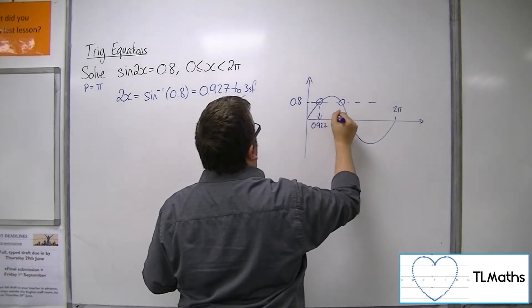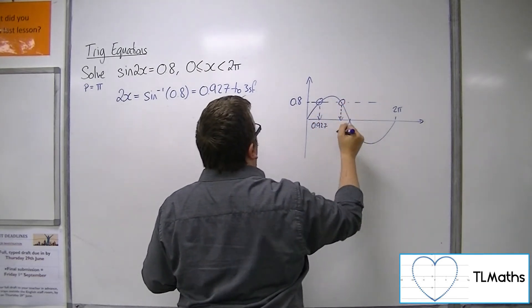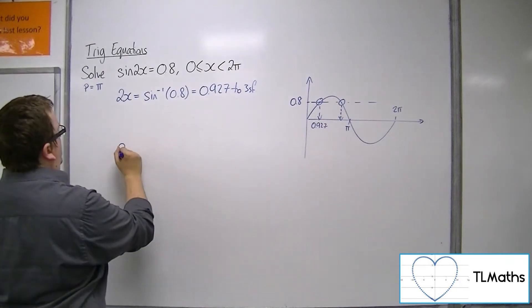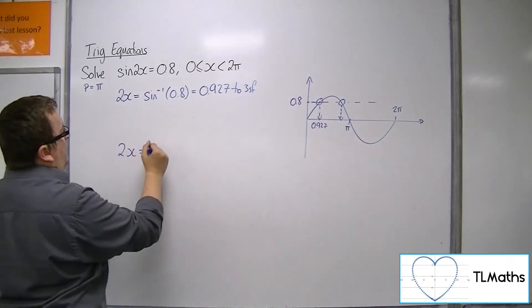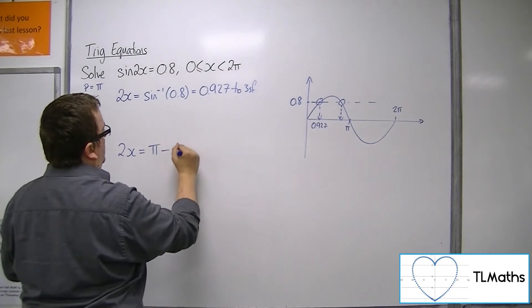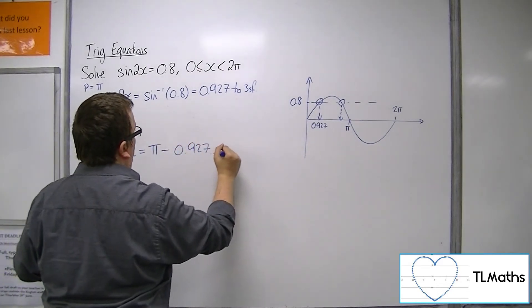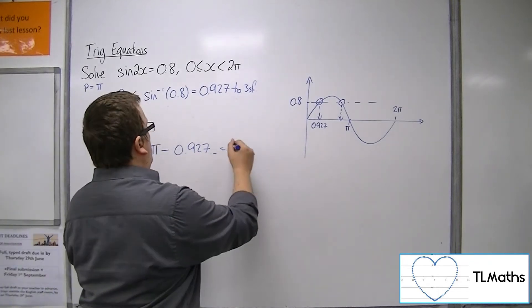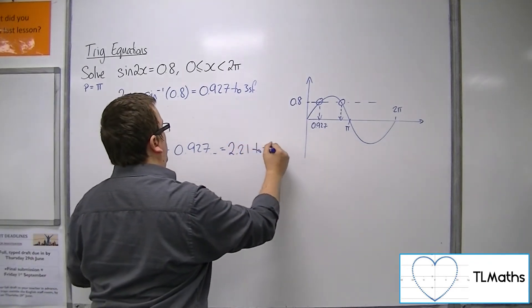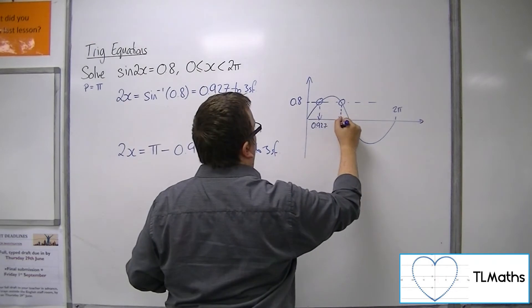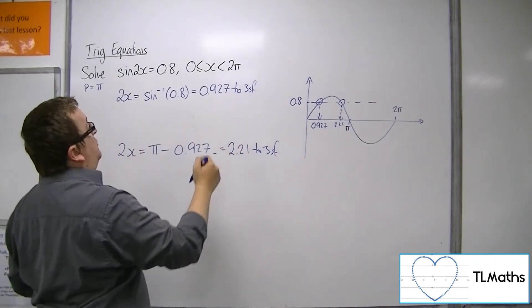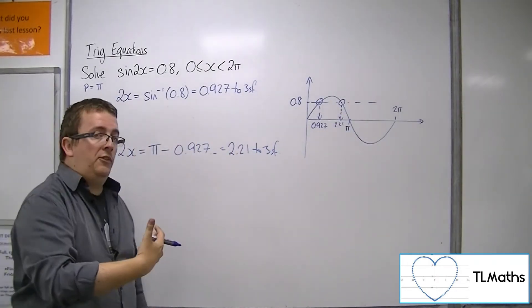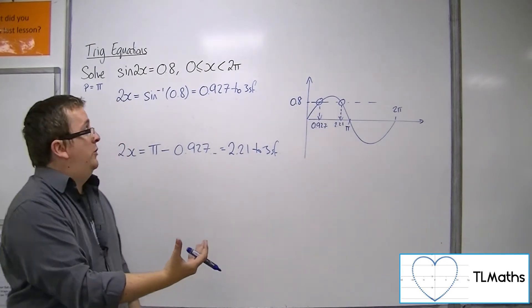One is the 0.927, and one can be found by subtracting 0.927 from π, which is 2.21 to 3 sig fig. So these are the two solutions to sine x equals 0.8 between 0 and 2π.